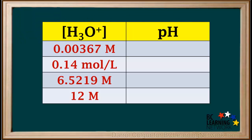Here are a few examples for you to try. Make sure you express the pH to the number of significant figures used in each given hydronium ion concentration. Pause the video and try these, then resume the video to check your answers.